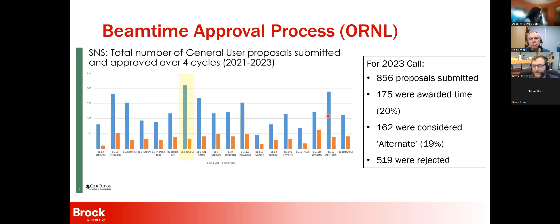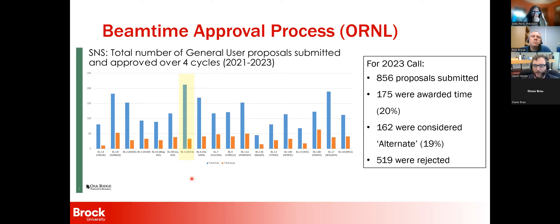To give you some numbers on this beam time process — this plot is from 2021 to 2023 for the Spallation Neutron Source at Oak Ridge, and I've highlighted the instrument I used, which is CNCS. The blue line is the total number of people that wanted beam time, and the orange line is those that got beam time. For this instrument, you're looking at roughly a one-in-four chance of getting beam time. CNCS tends to be one of the most oversubscribed. For the last call, we had almost 900 proposals submitted, only 175 were awarded time — 20% — 162 were considered alternate, and 519 were rejected. This is a very competitive field.